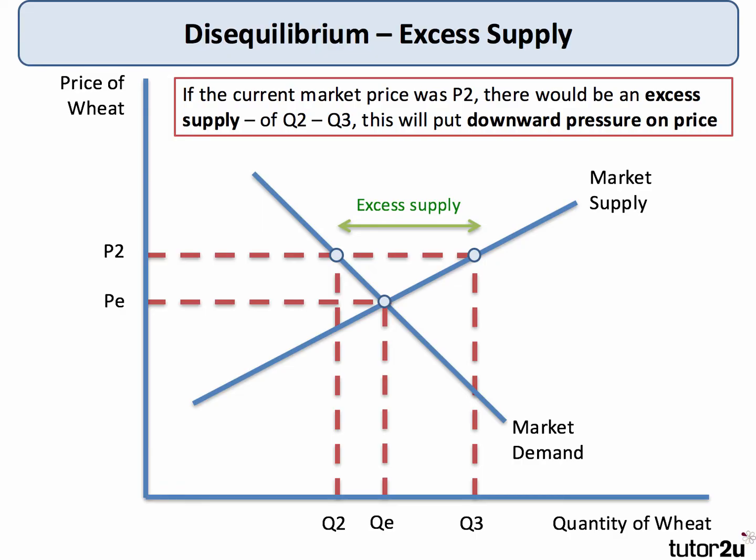A market price of P2, which lies above the equilibrium, leads to excess supply. If there is excess supply or surplus in the market, that creates downward pressure on the price back towards the equilibrium.